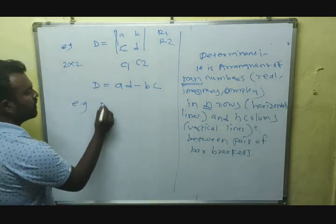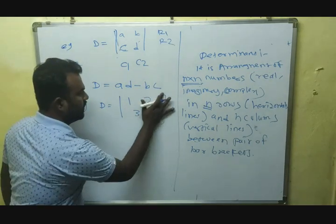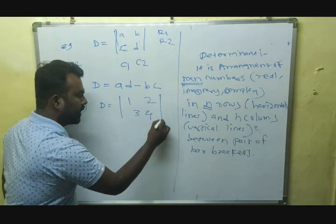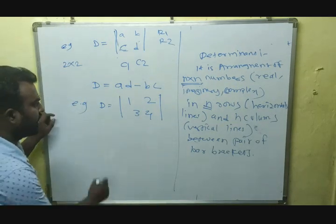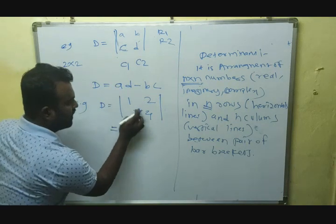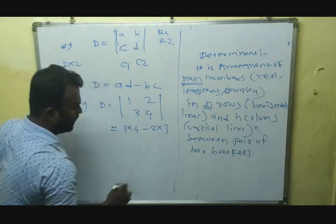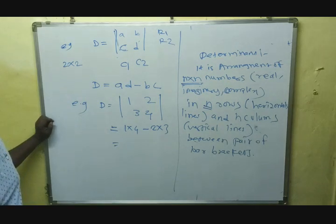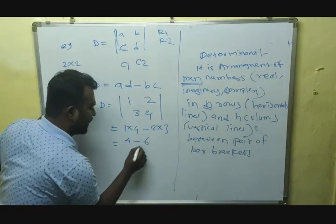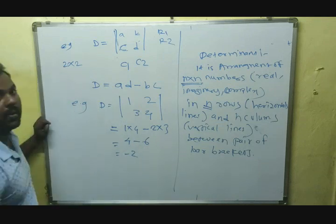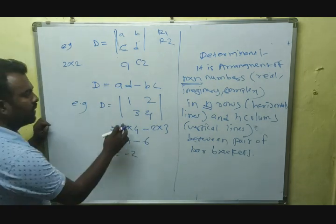Let me give you one example. Suppose we have to calculate the determinant of [1, 2; 3, 4]. Note that the bracket should be only bar — a straight line. This determinant is calculated as the product of 1 into 4 minus the product of 2 into 3. So 1 into 4 is 4, and 2 into 3 is 6. Therefore, 4 minus 6 equals minus 2. That is the value of this determinant.